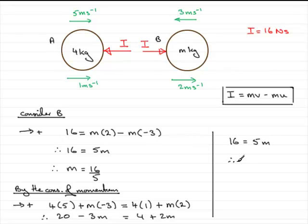And so again if we divide by 5 we get m equals 16 over 5. 16 fifths.